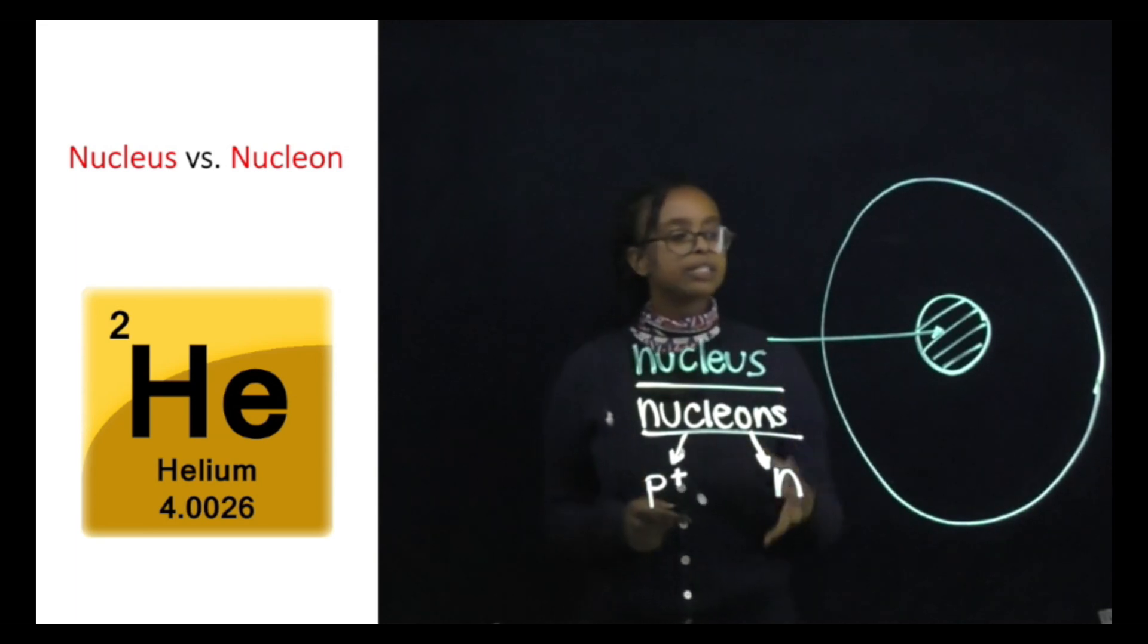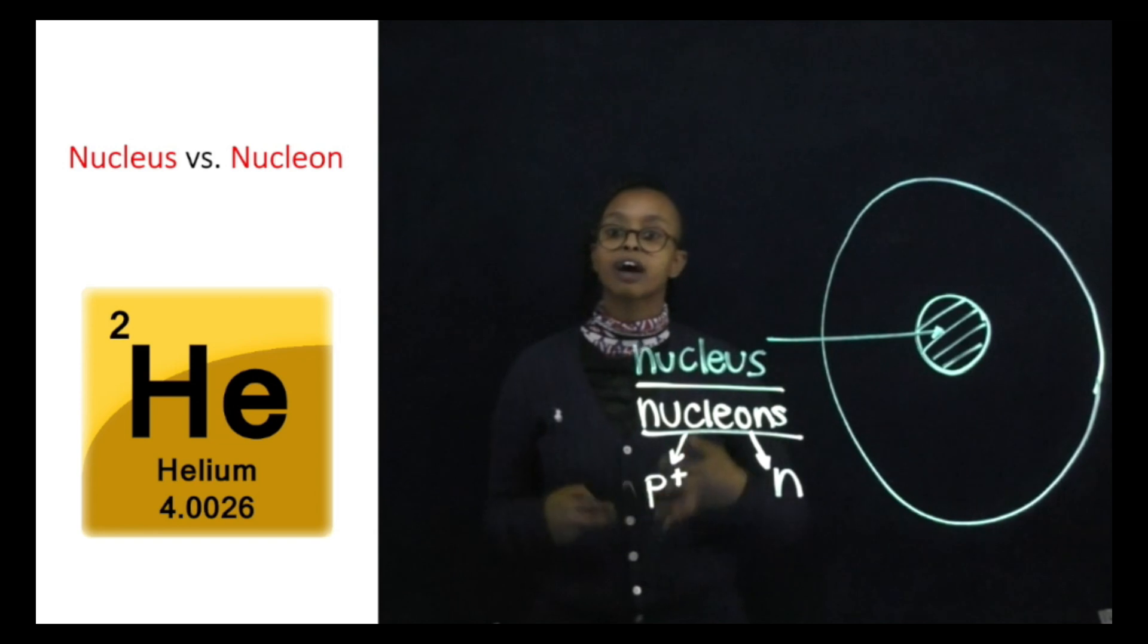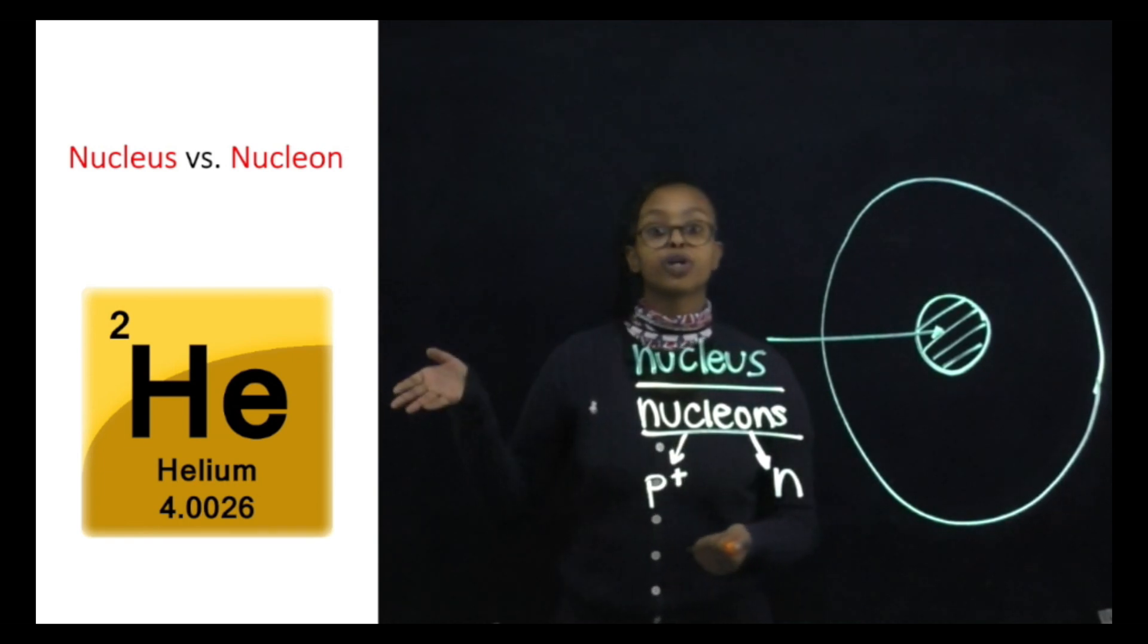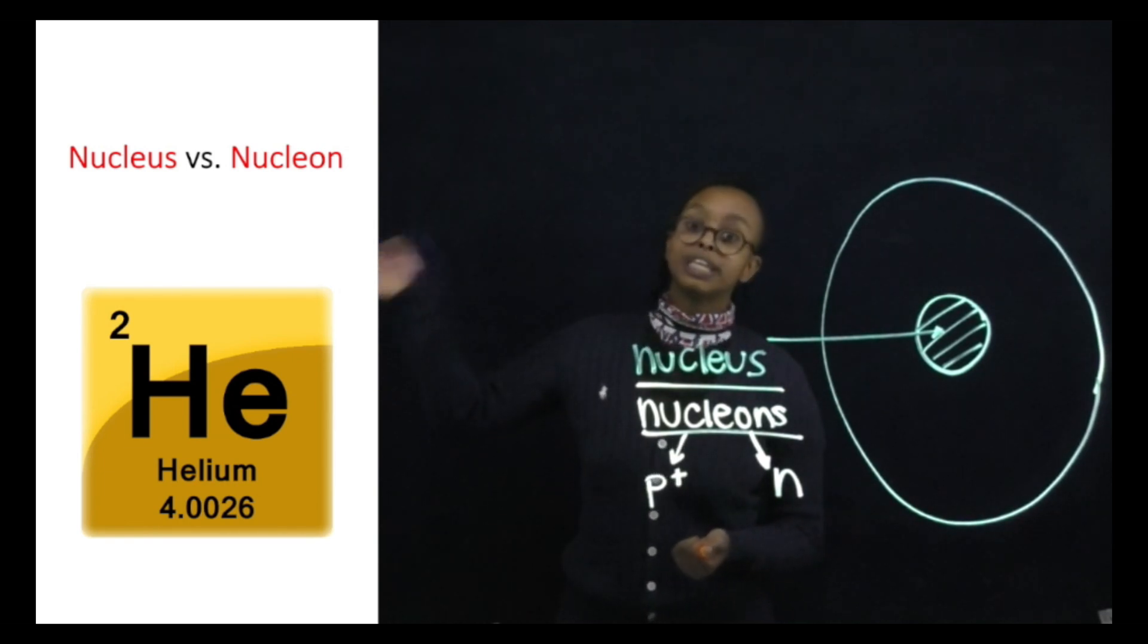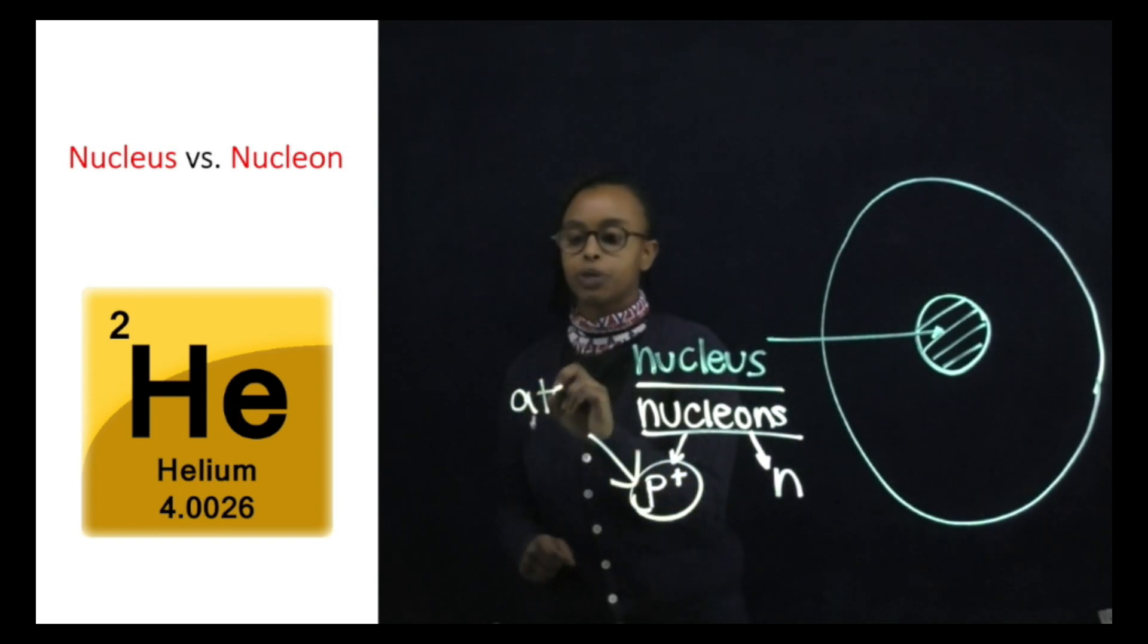So like we said, this densely packed nucleus is where we find the mass of an entire atom. If you were to see a periodic table, you may have seen two numbers like one right here of helium. The number on the top is where we would find our atomic number, and that atomic number is how many protons we have.